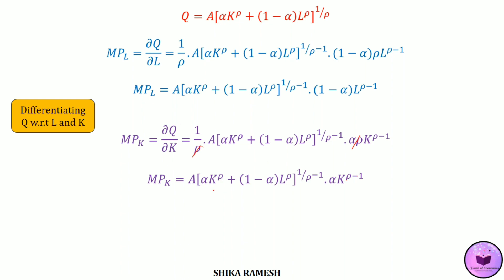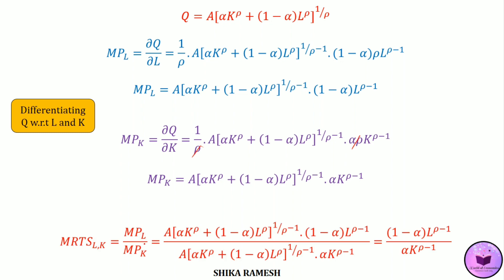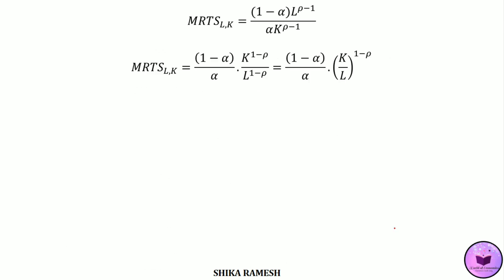Now we know MRTS of labor for capital equals MPL by MPK. Substituting these equations, the first terms are identical in both numerator and denominator, so they cancel out. We get MRTS of labor for capital equal to 1 minus alpha times l raised to rho minus 1, divided by alpha times k raised to rho minus 1. Rewriting in k by l form gives MRTS equal to 1 minus alpha by alpha, multiplied by k by l the whole raised to 1 minus rho.